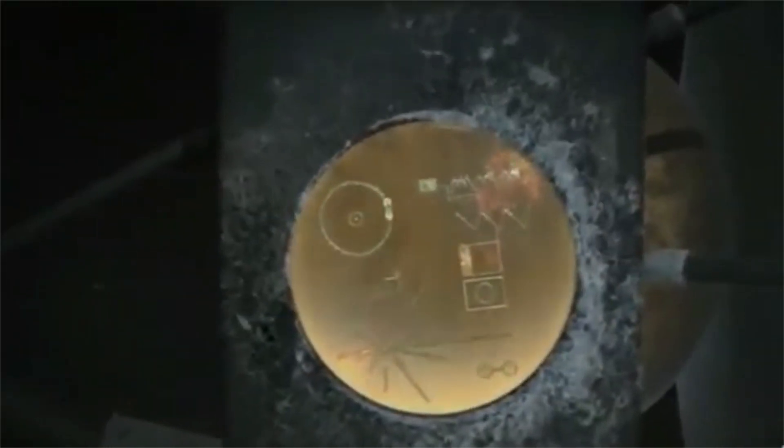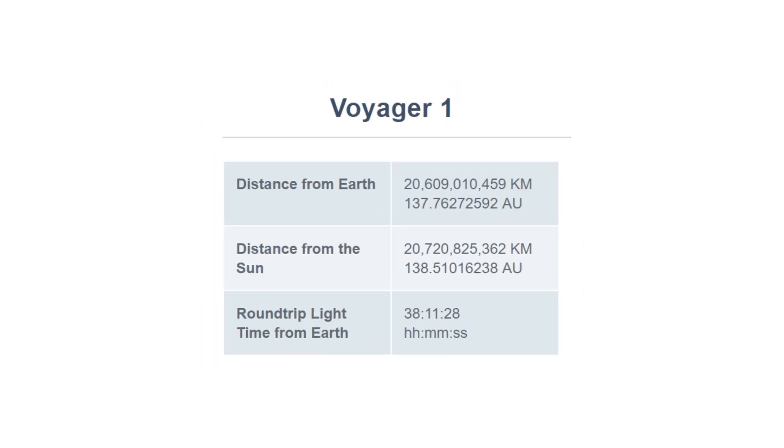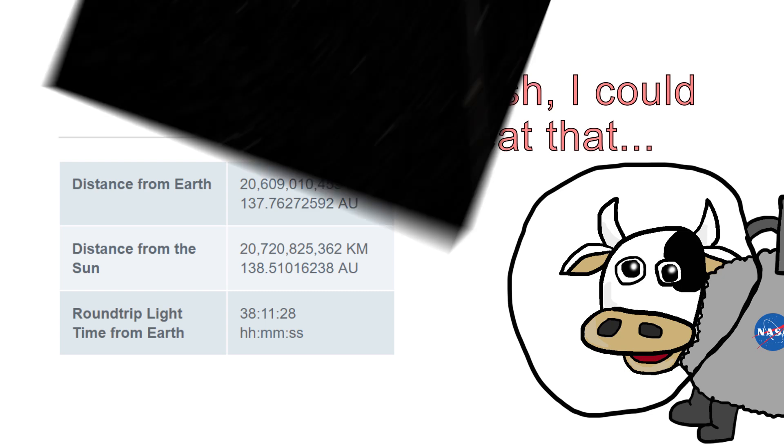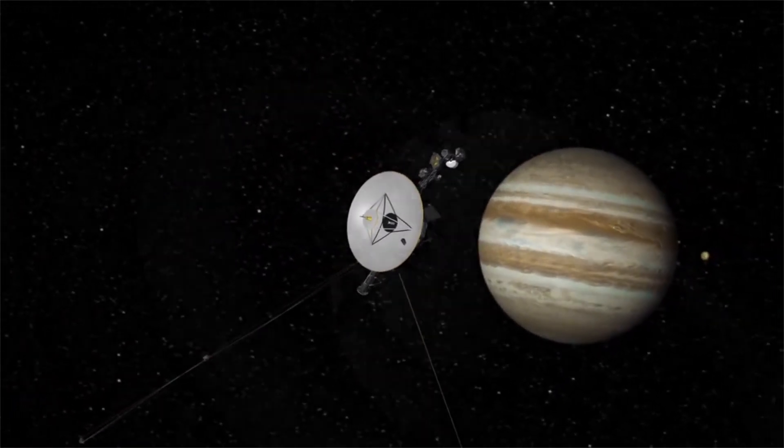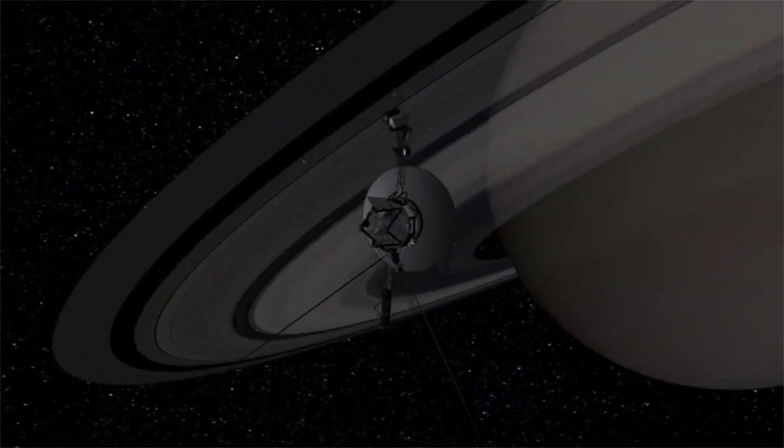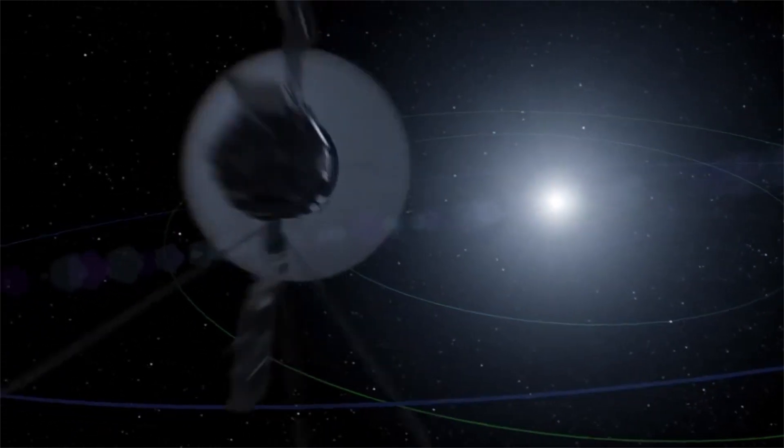As of May 10, 2017, Voyager is 20.6 billion kilometers from Earth, which means it has entered interstellar space, the vast expanse between stars. This nearly 40-year-old probe has traveled farther than any human or man-made object in history, and with such a head start, it's unlikely that we will ever launch anything that will overtake it in the decades to come.